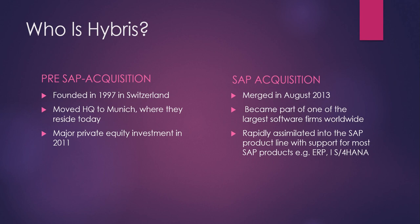As a background to Hybris, it was founded in 1997 in Switzerland. They moved headquarters to Munich, where they reside today. A major private equity investment was made in 2011, and in August 2013 SAP acquired the company, making Hybris part of one of the largest platforms worldwide. It was rapidly assimilated into the SAP product line with support from most products, for example ERPs like S/4HANA.